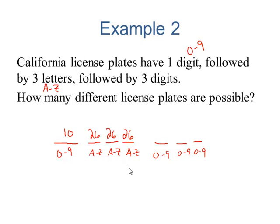Another thing I should warn you about, sometimes you're told that the letter can't be O or Q or what have you, and you'll have to reduce this number of twenty-six as well. For the last three digits, that's ten, ten, and ten.